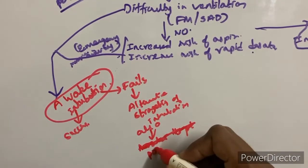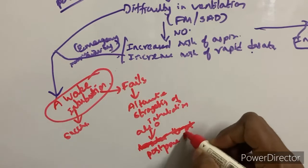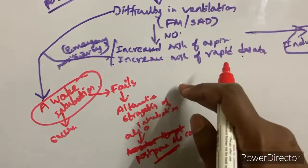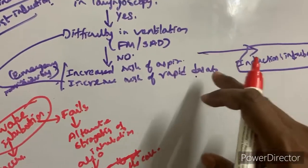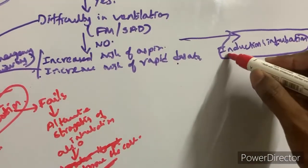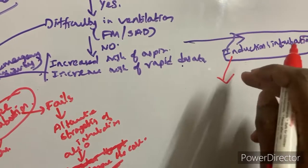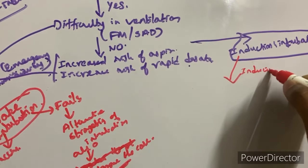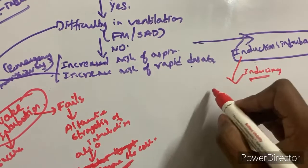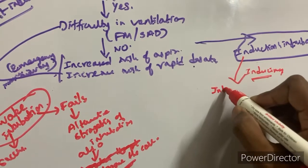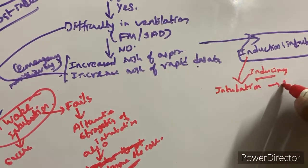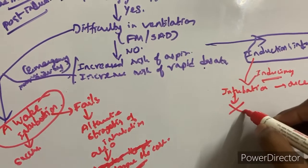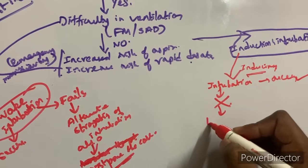Postpone the case if it is not an emergency procedure. For post-induction intubation: induce the patient with inducing agents and then attempt intubation. If intubation is successful, there is no problem. If intubation fails, limit the attempts.